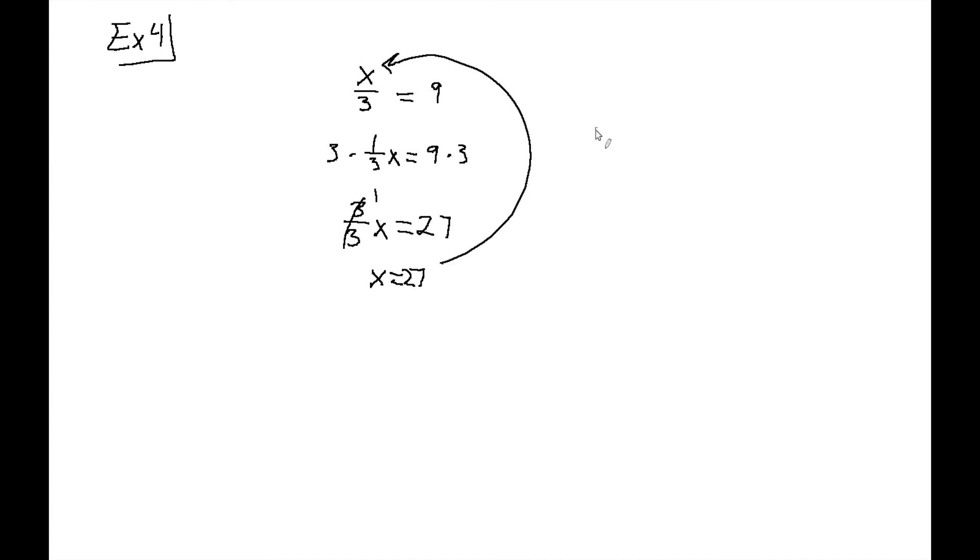We can plug the x back into the original equation. Our x is 27. So 27 would be on top of 3. So 27 divided by 3 equals 9. Let's see if that works. How many times does 3 go into 27? We can try 8. No, that's not quite, that's 24. 3 times 9, we'll try 3 times 9. That will be 27. So we know 27 divided by 3 is 9. And so 9 equals 9, that's a true statement. So we know that our x is valid.